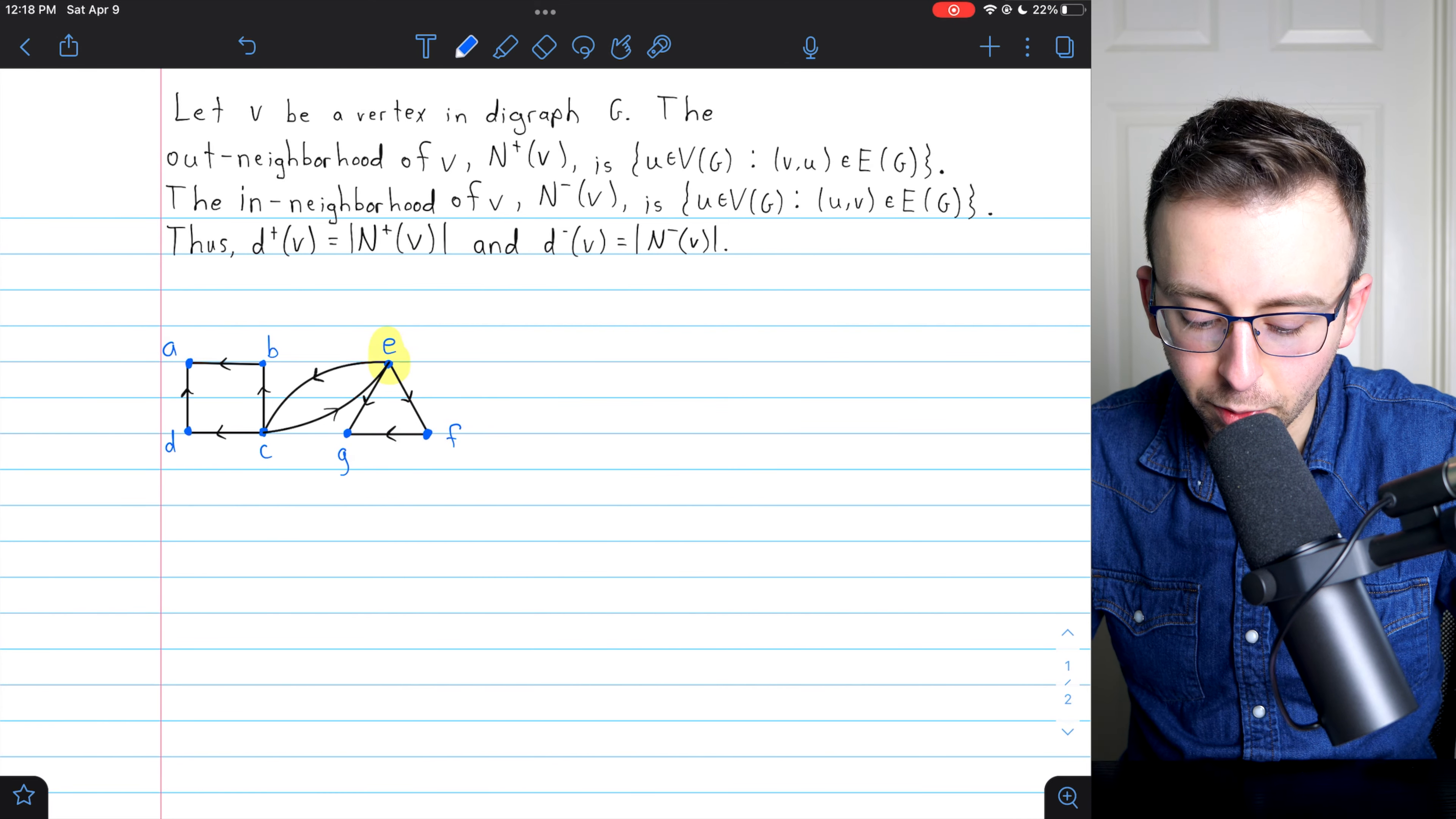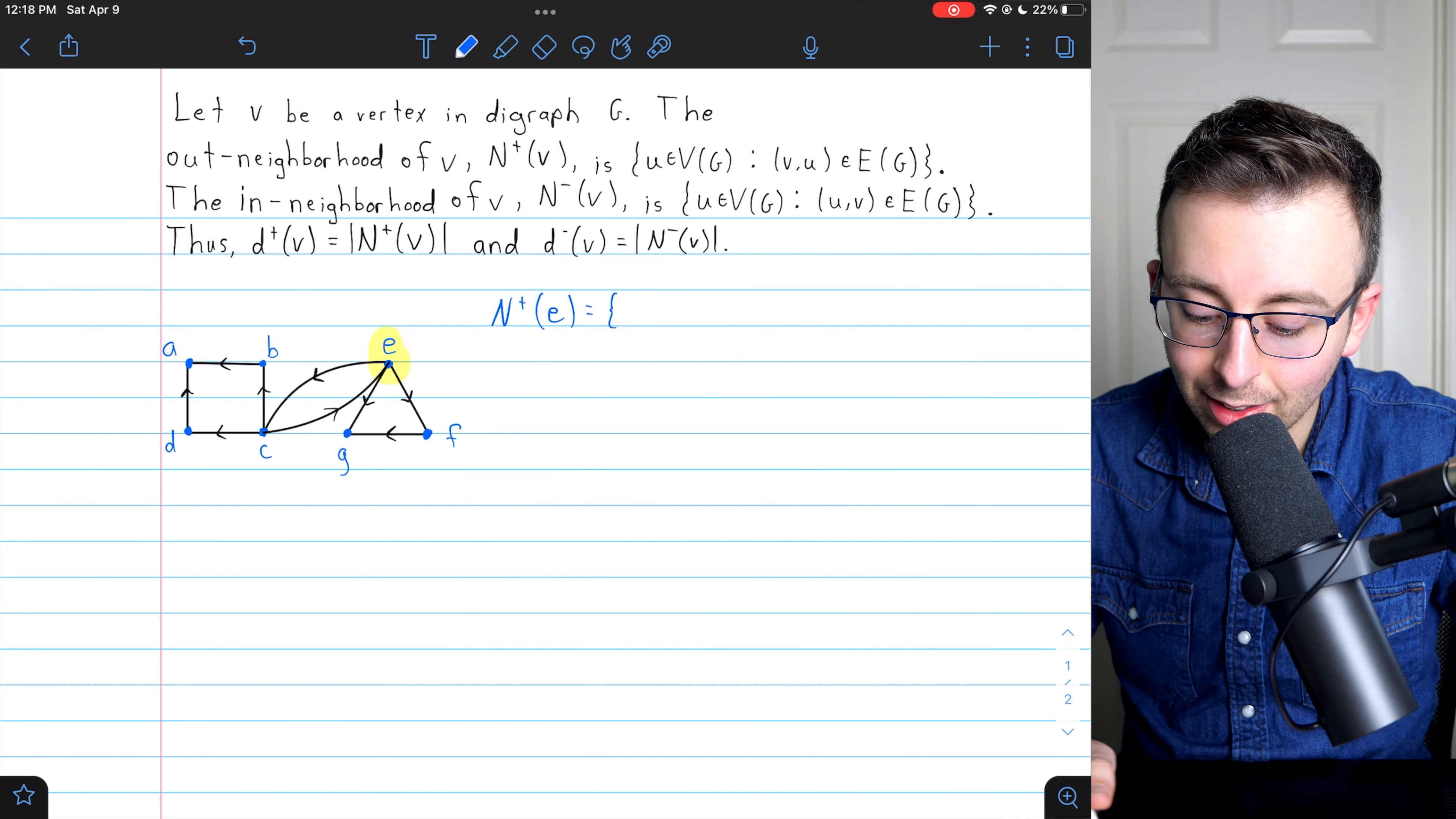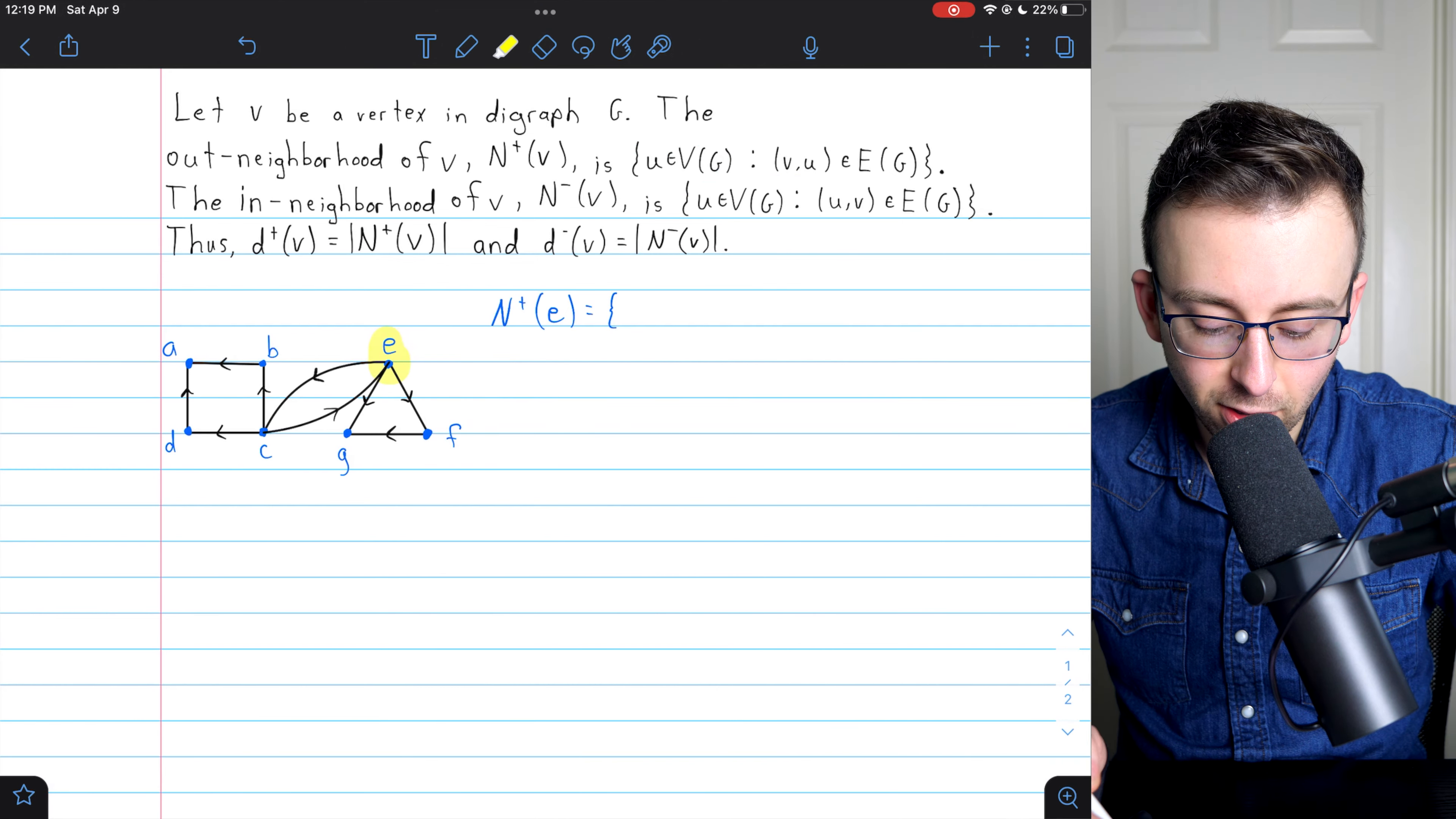I like E, so hopefully you picked E. All right, so I'll just write the out-neighborhood of the vertex E. What is it? Well, it's just all of the vertices in the directed graph that E is adjacent to. What vertices is E adjacent to?